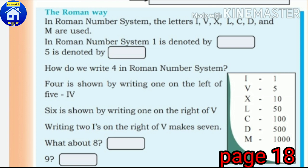In the Roman number system, 1 is denoted by I, and 5 is denoted by V.